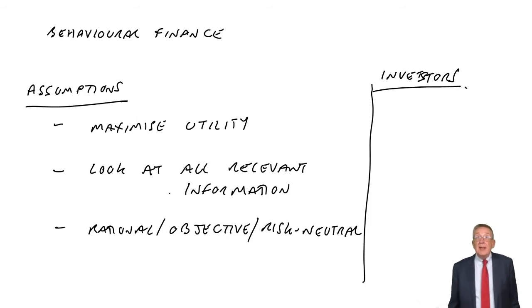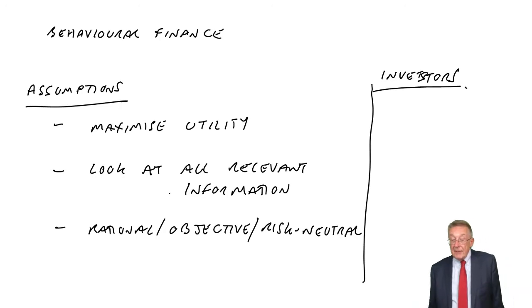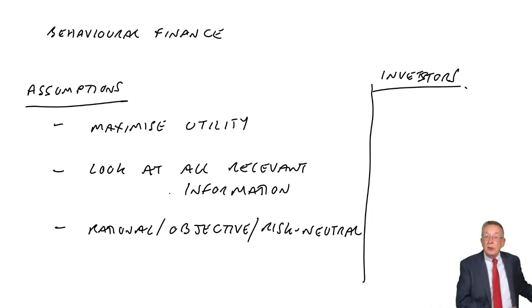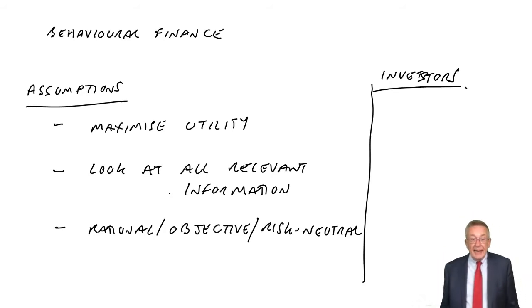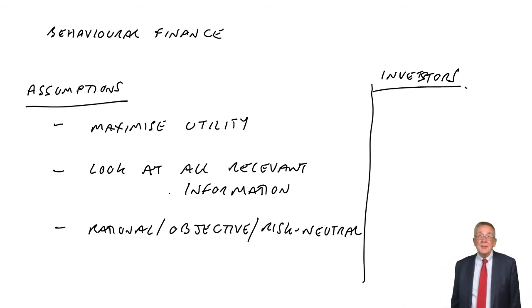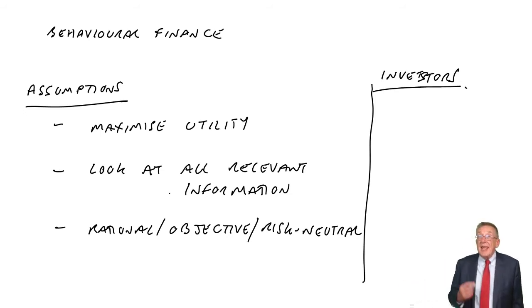First of all, we assume an investor's objective is always to maximise their utility — to maximise the share price and their wealth. However, they don't always do that in real life. Other factors come into play. For example, some people for ethical reasons don't want to invest in cigarette or alcohol companies, even though those companies might increase their wealth enormously. Another factor has come into play — the ethical side of it.